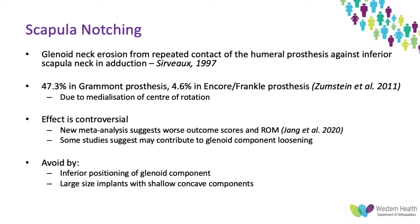The effect of notching is controversial. The systematic review I'm drawing from says it's a problem that doesn't affect final outcome based on the majority — especially the higher quality — studies. However, a new meta-analysis in 2020 suggests that patients with scapular notching have worse outcome scores and range of motion, and some studies suggest it contributes to glenoid component loosening. Unfortunately, many studies in the meta-analysis didn't account for confounding factors, so you need to read into it with care.